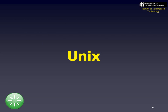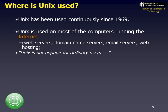Unix has been around for ages. Unix has been used continually since 1969—probably before your parents were born. It's used on most computers running the internet. For example, on web servers and domain name servers. Probably not as much on mail servers—a lot of online mail servers now, like Google, Microsoft, Outlook Web Access. Web hosting is very popular as well.